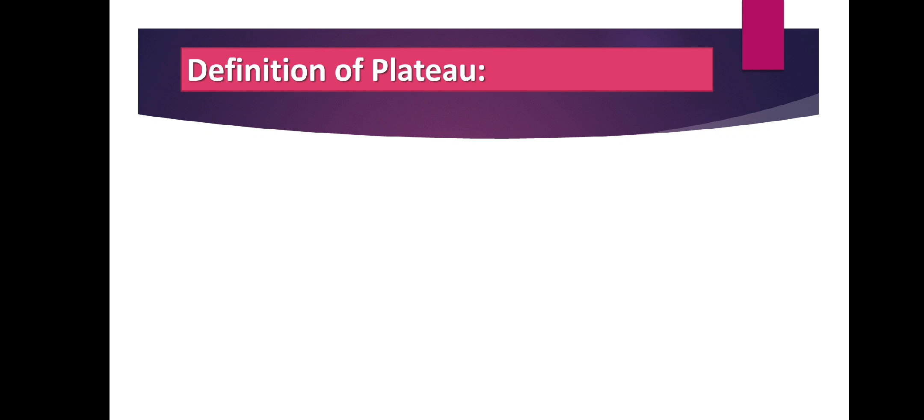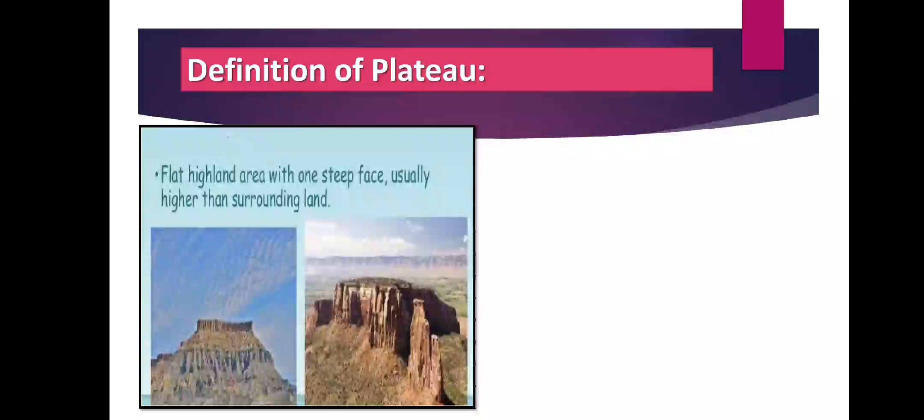Now let's start today's lecture on plateaus of Pakistan. First, the definition of a plateau: a plateau is a landform which is high from the surrounding surface like a mountain, but has a flat top like a plain. It is also called tableland. A plateau has an uneven character — there are mountain ranges, plains, and river valleys on a plateau. Some plateaus are fertile while others are poor land, depending on their height and amount of rainfall. As you can also see on your screen: a plateau is a flat highland area with one steep face, usually higher than the surrounding land.